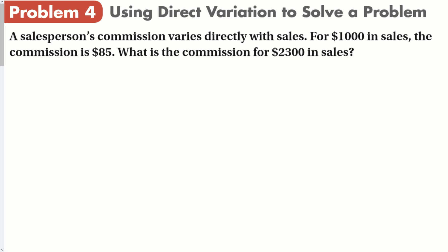Word problem. We can use direct variation to solve it. A salesperson's commission varies directly with sales. Makes sense - the more you sell, the more commission you make. For $1,000 in sales, the commission is $85. You should realize what the independent variable is, what the dependent variable is. $85 is my output, the dependent variable. My input is the sales. So I divide both sides by $1,000, and I get 0.085 equals k.